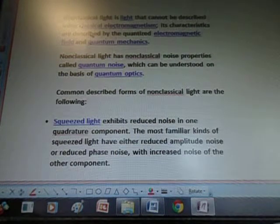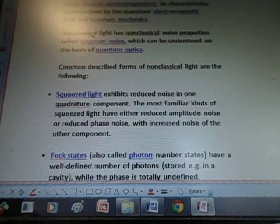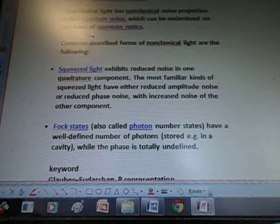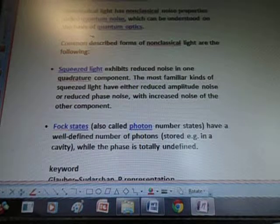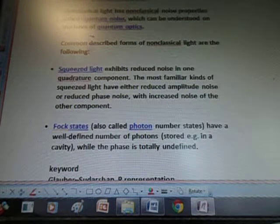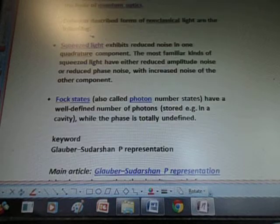Common described forms of non-classical light are the following. Squeezed light exhibits reduced noise in one quadrature component. The most familiar kinds of squeezed light have either reduced amplitude noise or reduced phase noise, with increased noise of the other component.